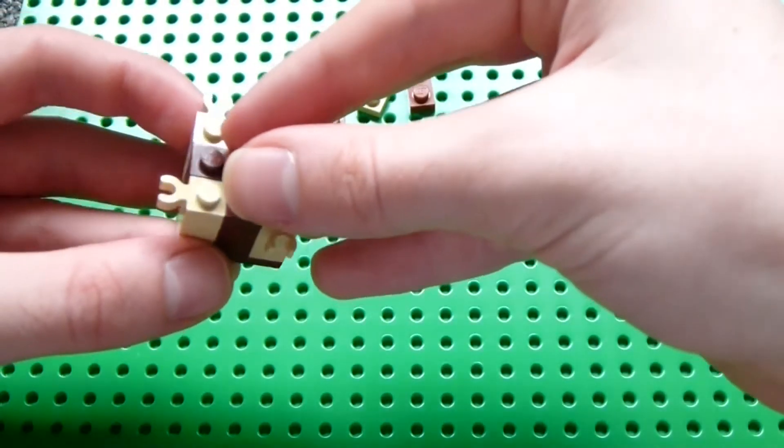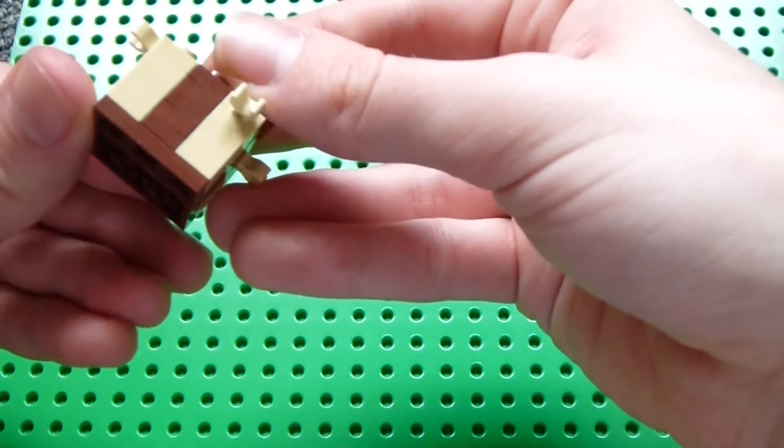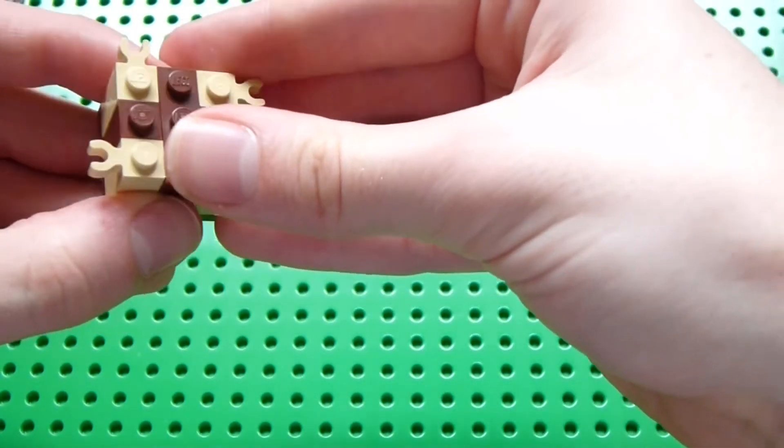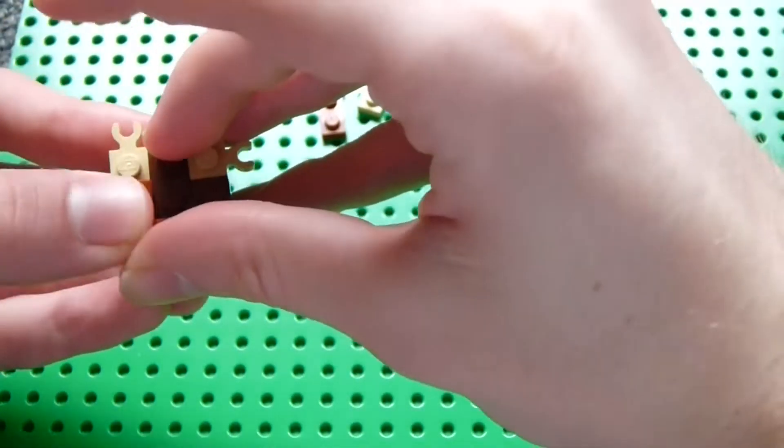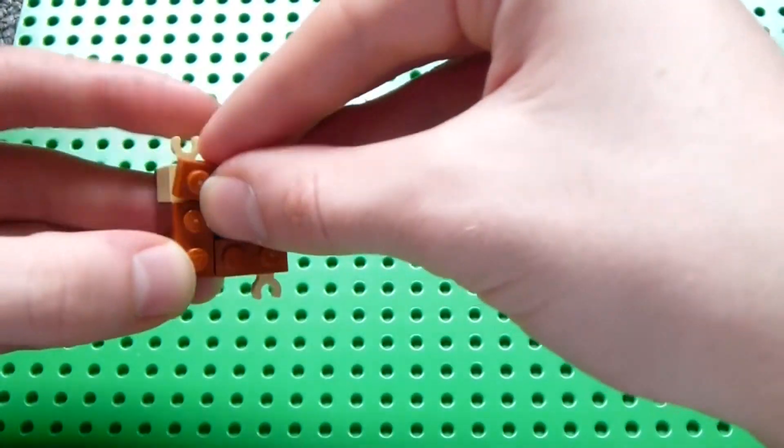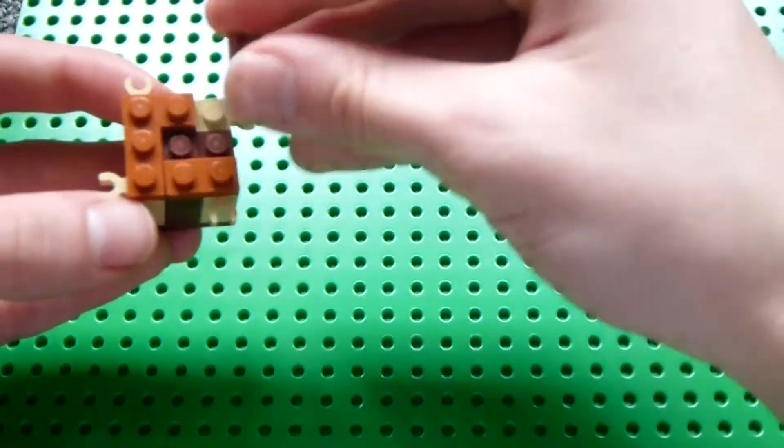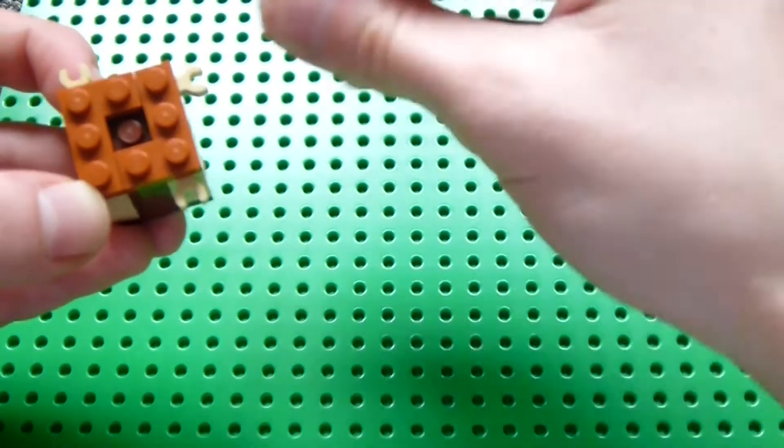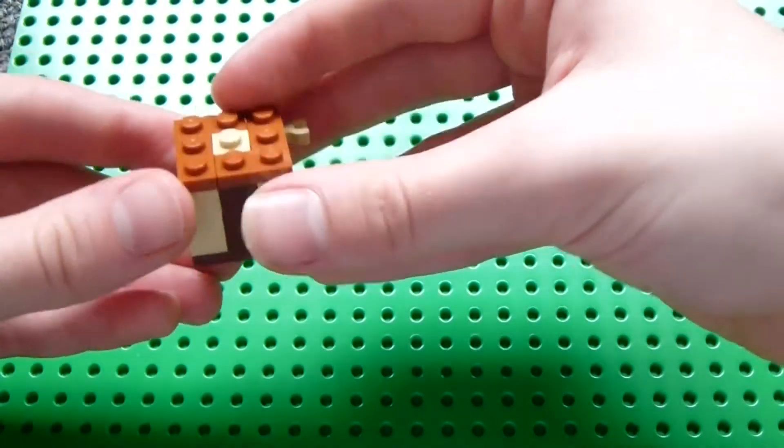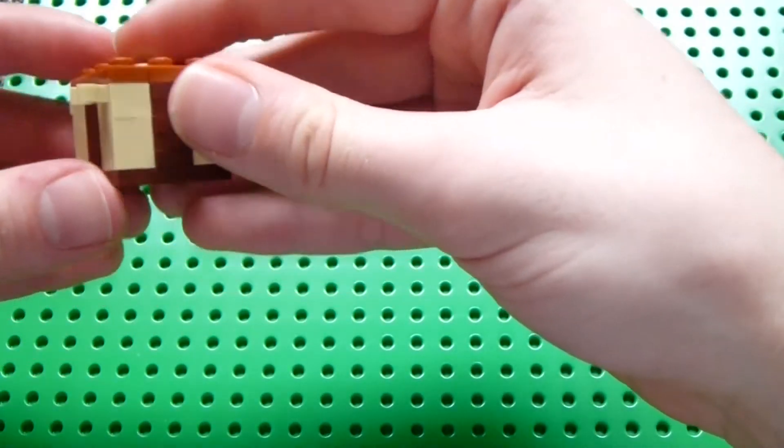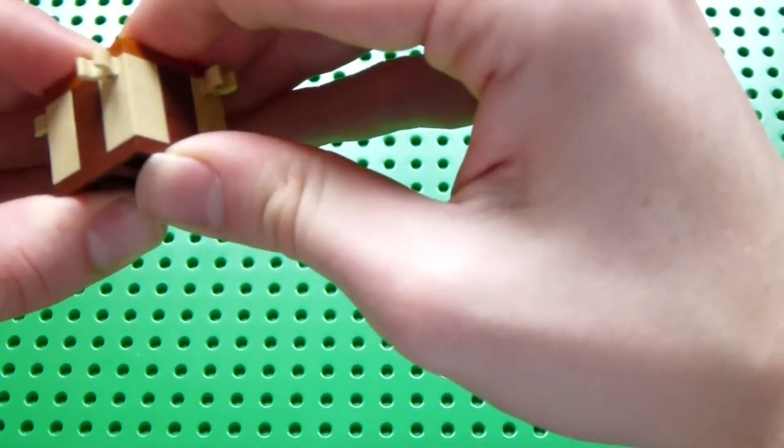So let's hold this together first on top. We'll want to place some 1x2 dark orange plates in a ring, and then a 1x1 tan plate in the center there. This should have held together well.